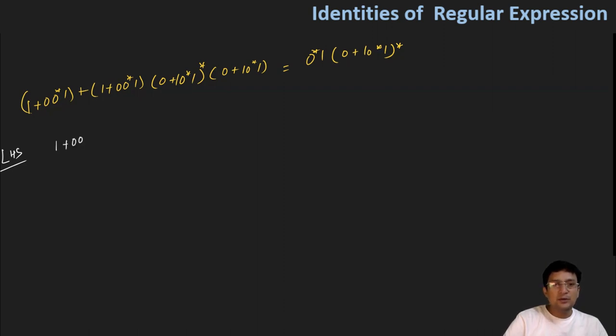This is (1 + 00*1) plus (1 + 00*1) and (0 + 10*1) and its closure and (0 + 10*1). So let's analyze the left-hand side quantity. You can see that these two quantities are the same.